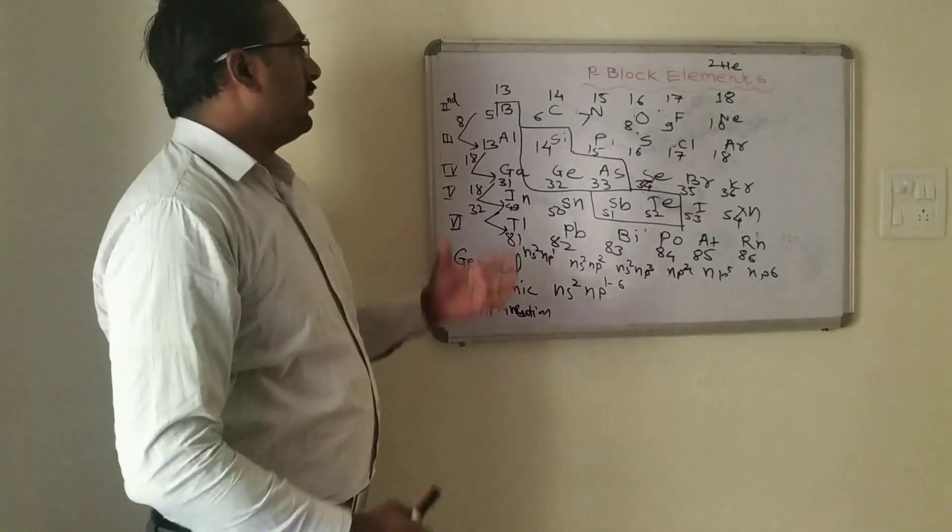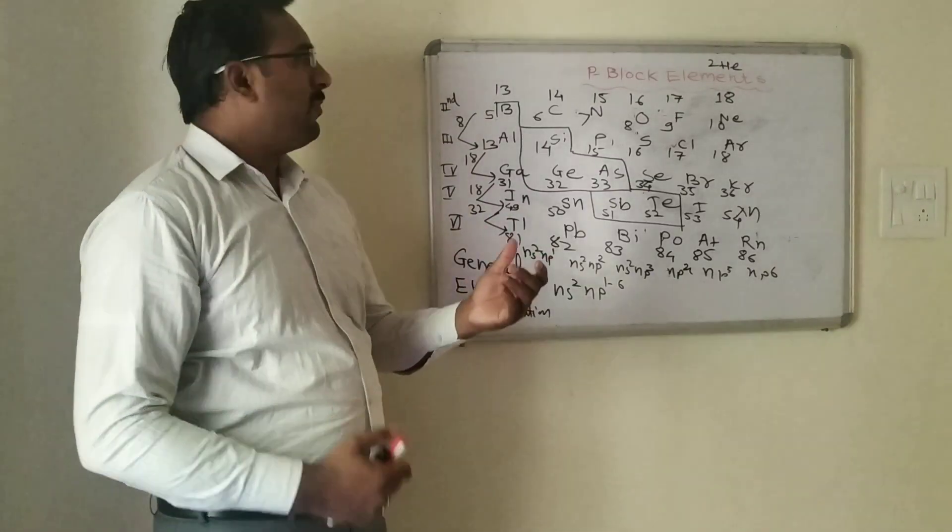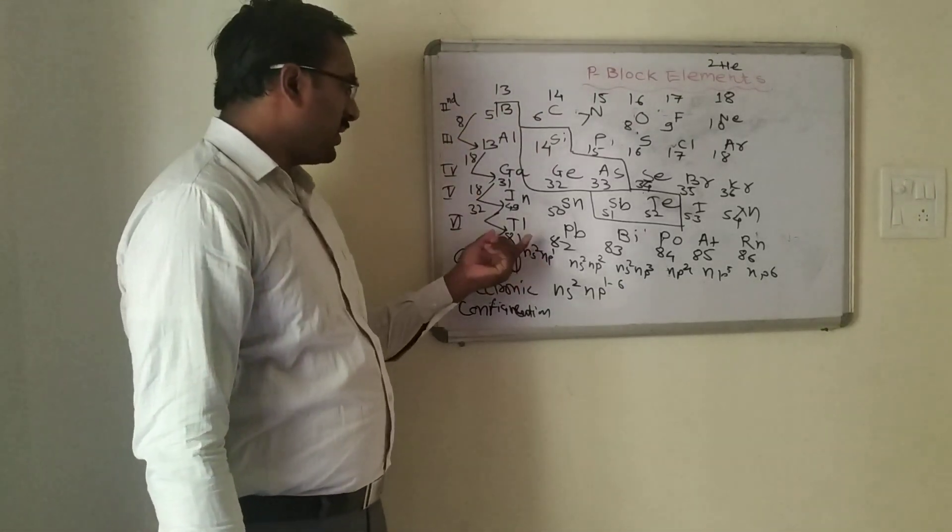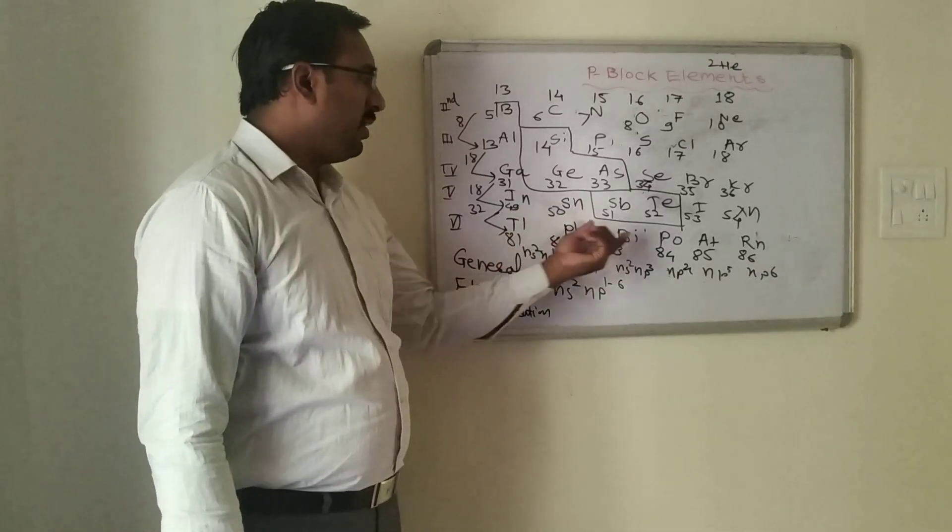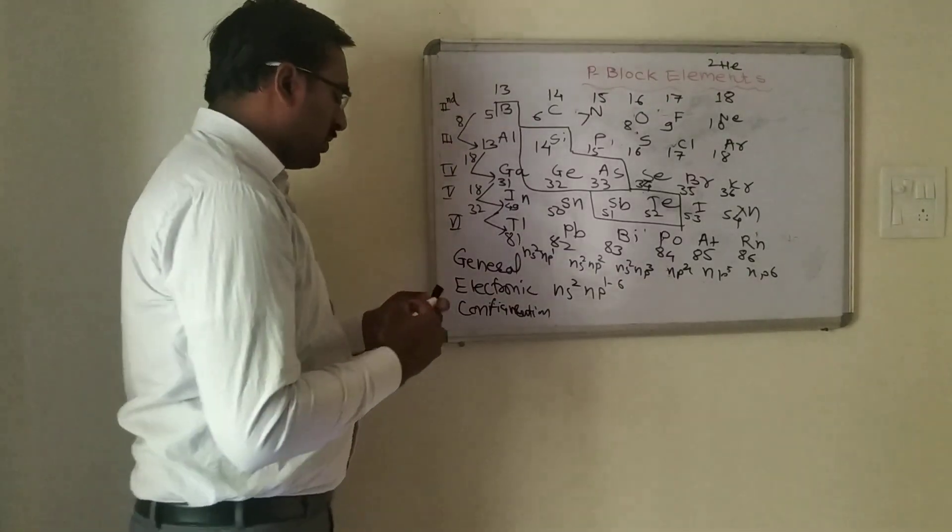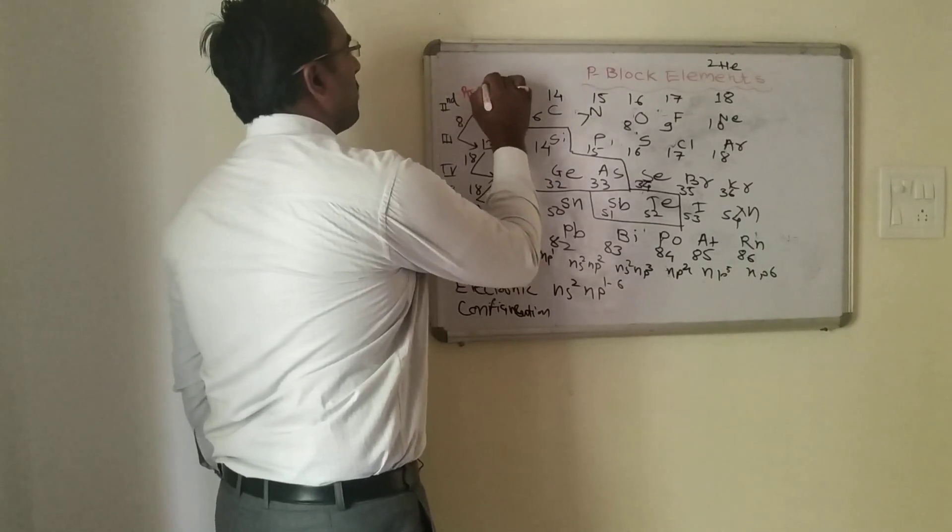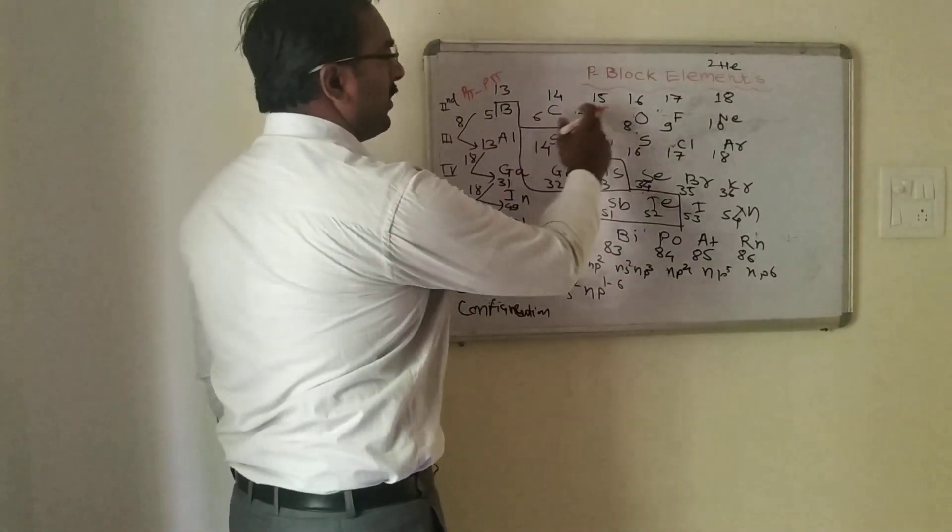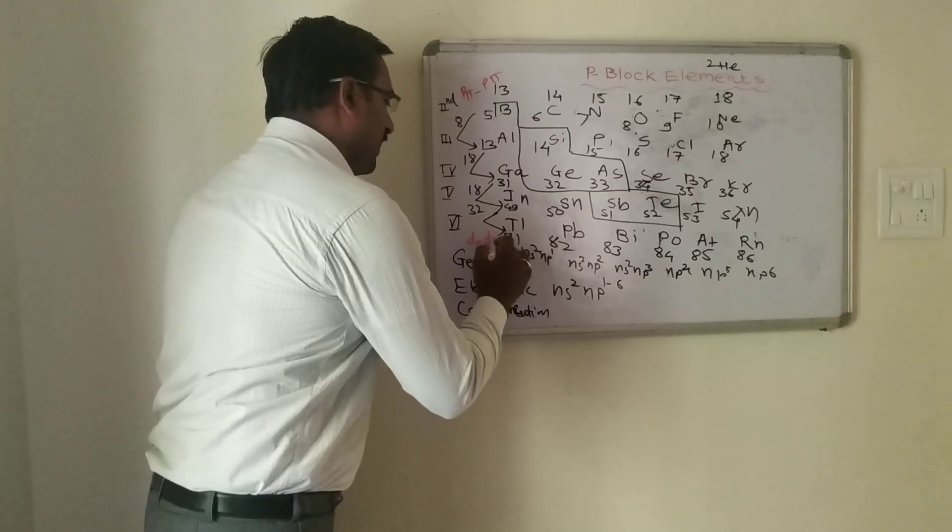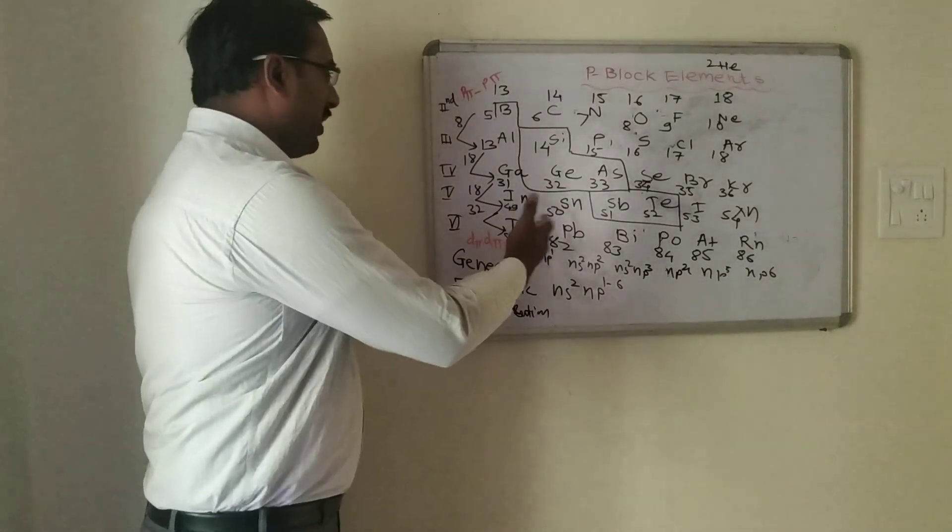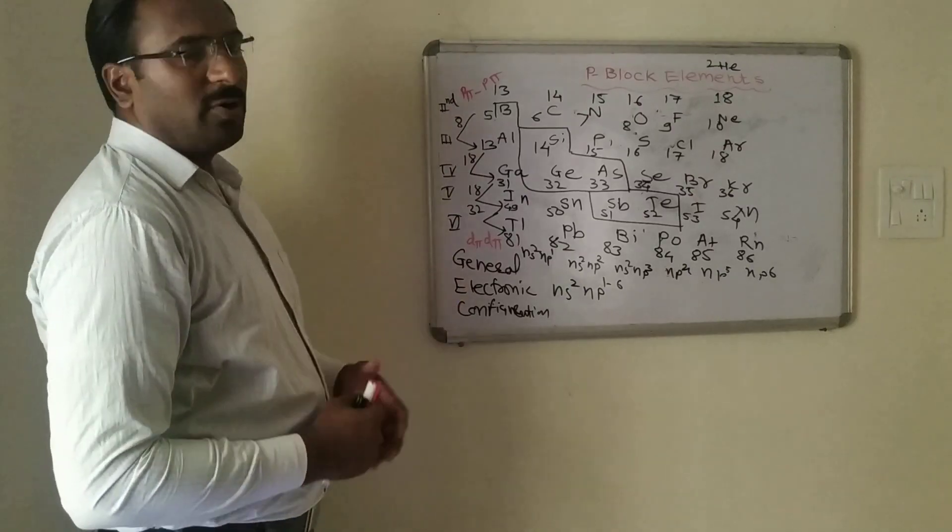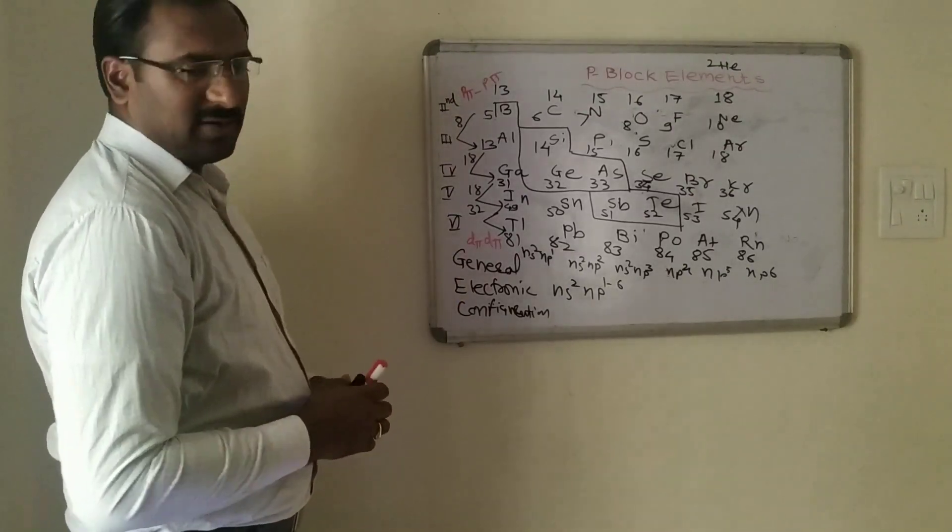Second period members of the p-block form p-pi p-pi bonds, while higher members like metals thallium, lead, bismuth, polonium, indium, and tin form p-pi d-pi bonds. The p-pi p-pi bond formed by boron, carbon, nitrogen, oxygen, and chlorine is the stable one, while the d-pi d-pi bond is weaker. There is also an important concept called the inert pair effect that we want to study.